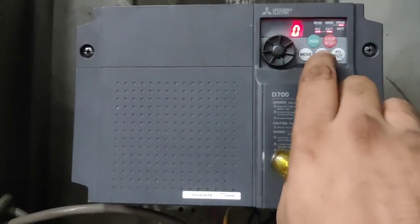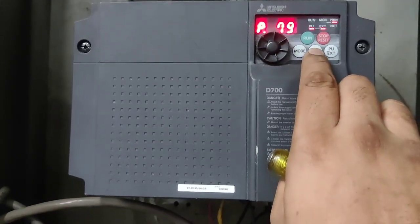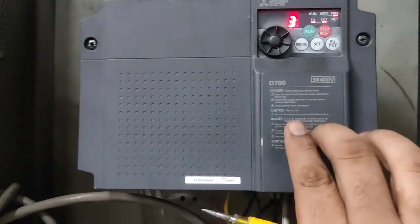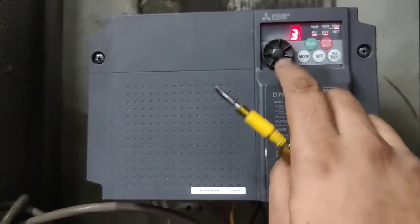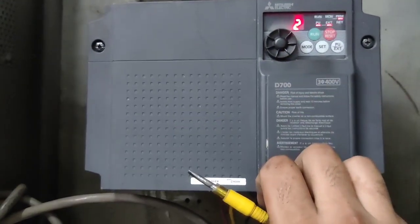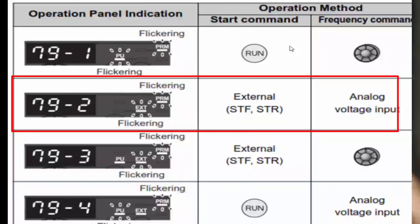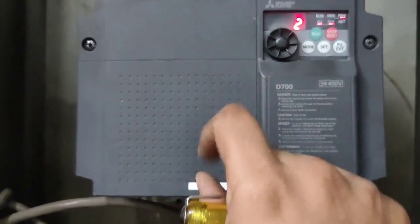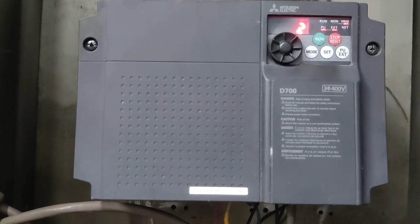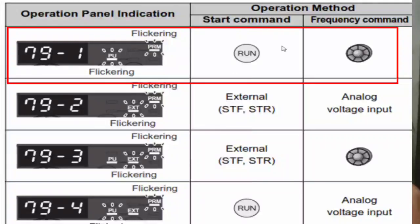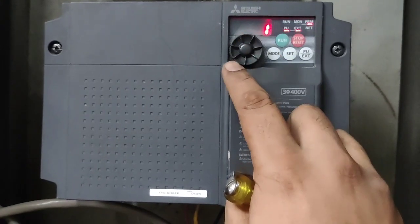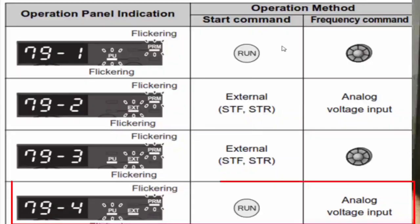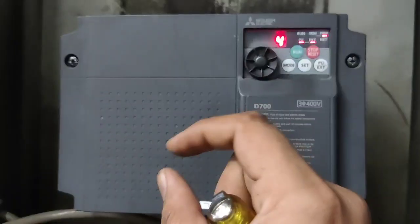Next parameter is P79, which is operation mode selection. If you set 3, your drive will start with an external push button and speed control will use the PU port. If you set 2, your drive will start and stop with an external push button and frequency will be changed with an external potentiometer — external mode. If you set 1, your drive will start and stop with PU mode push buttons and speed will be controlled with the PU potentiometer. If you set 4, your drive will start and stop with PU mode and speed will be controlled with the external potentiometer.